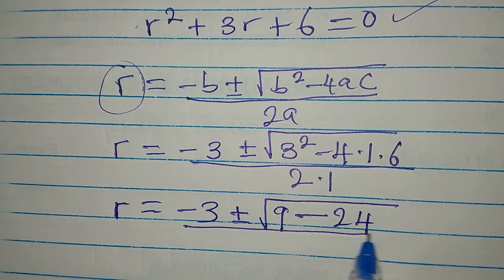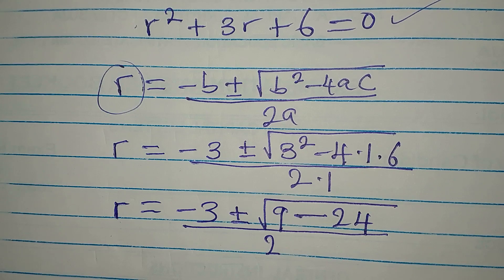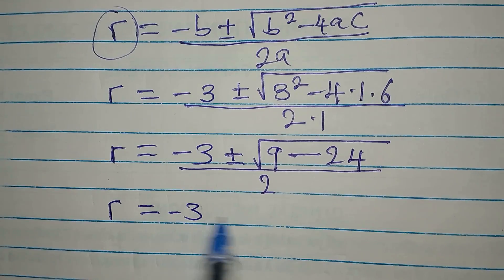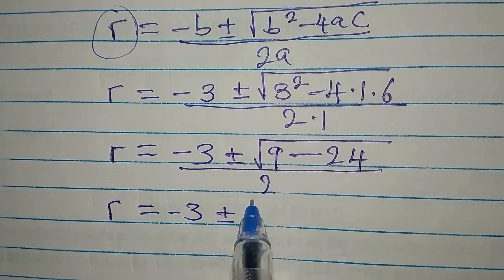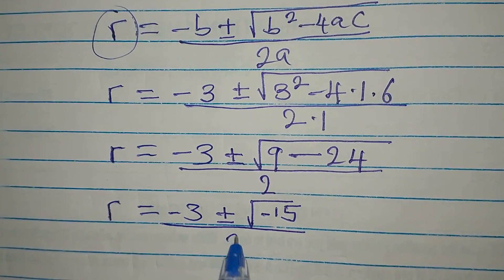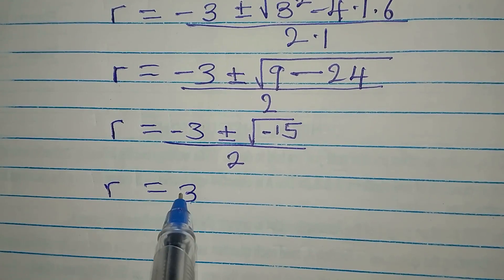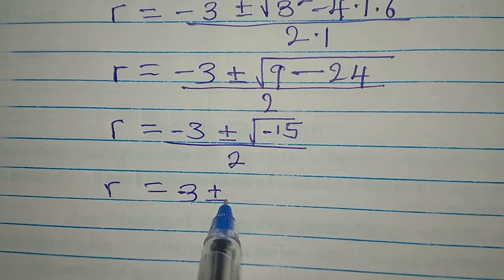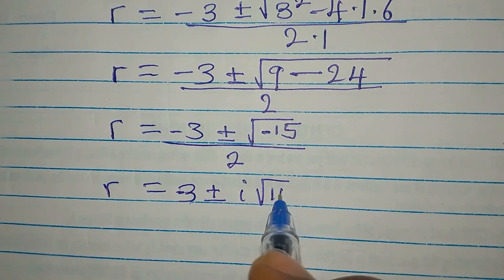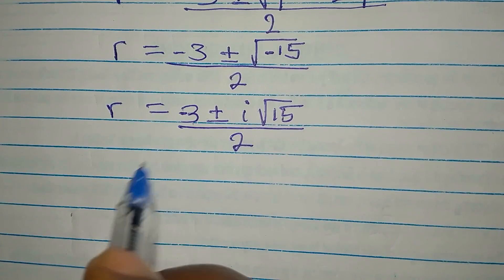We divide by 2 because 2 times 1 is 2. So r equals minus 3 plus or minus square root of negative 15, divided by 2. The negative under the square root gives us imaginary i, so we have square root of 15 times i, divided by 2.